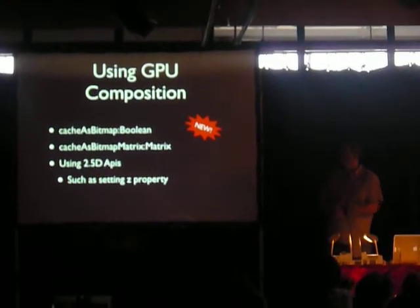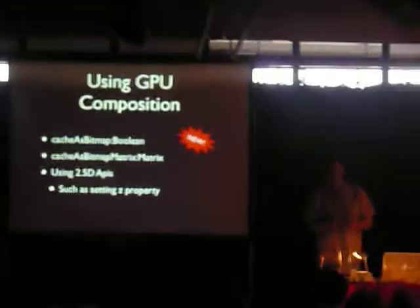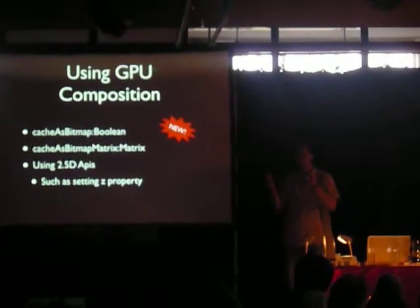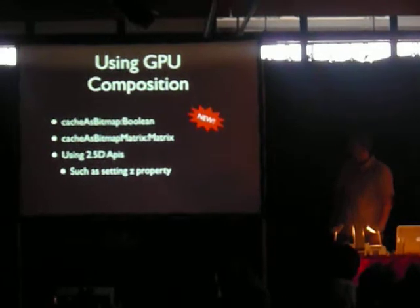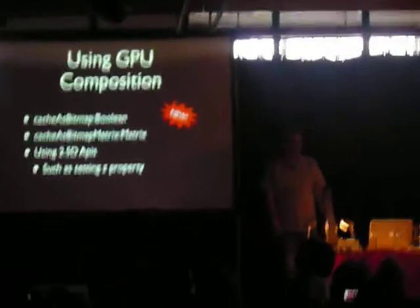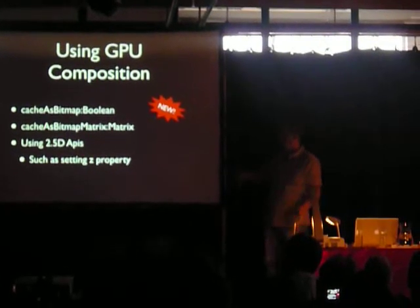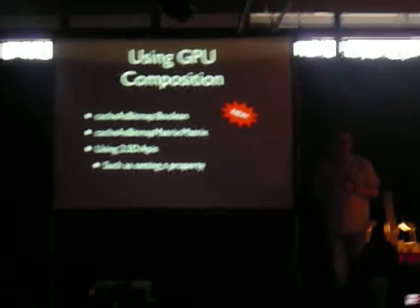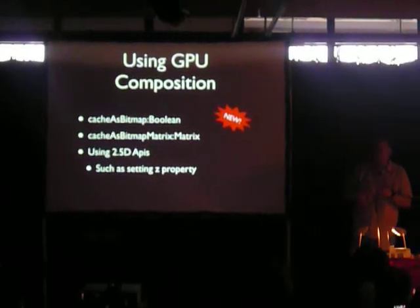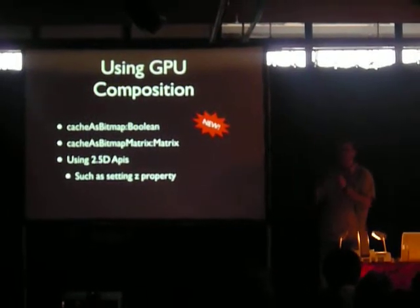In order to use these APIs, there are a couple of ways. First, CacheAsBitmap, which everyone should be familiar with — basically it tells the player to treat this as a bitmap. Cache, even as a vector, rasterizes it and treats it as a bitmap. Now there's a new API called CacheAsBitmapMatrix. What this allows you to do is fix an issue. CacheAsBitmap works as long as you're not rotating your item — if it's just moving around, it's fine. But if you rotate it, it's going to re-draw.